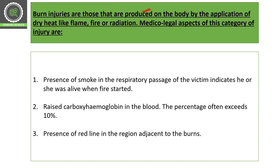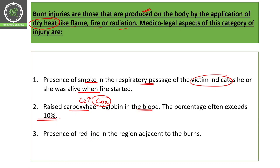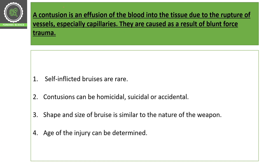Burn injuries are produced on the body by the application of dry heat such as flame, fire, or radiation. Medico-legally: presence of smoke in the respiratory passage of the victim indicates the person was alive when the fire started; raised carboxyhemoglobin in the blood due to carbon monoxide concentration exceeding 10% is significant; and presence of a red line in the adjacent region around the bone is also an important indicator.